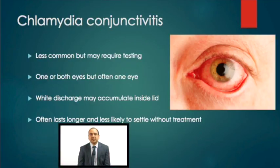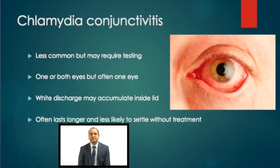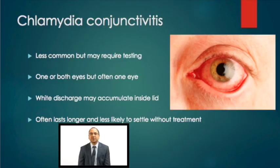This slide shows the third type: chlamydia conjunctivitis. It is much less common but still something that has to be considered. More commonly it may only affect one eye, though both eyes can be affected. It also tends to last longer — whereas other types of conjunctivitis often settle by themselves or quickly with treatment, chlamydia conjunctivitis can just linger and tends not to settle easily. The discharge tends to be watery, but a whitish sticky discharge can build up on the inside of the lid, which can be seen by your doctor on examination.